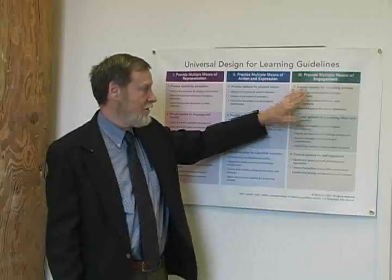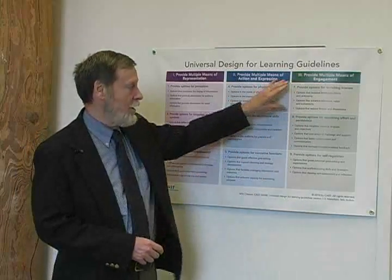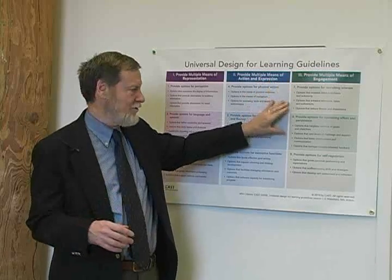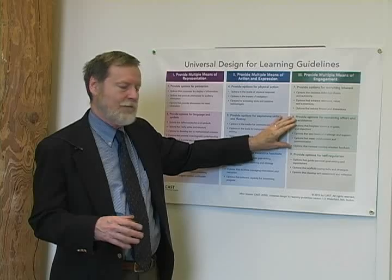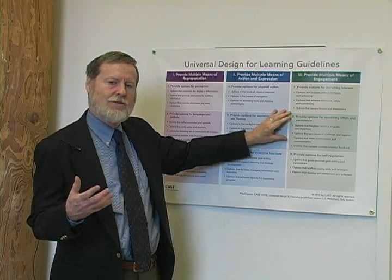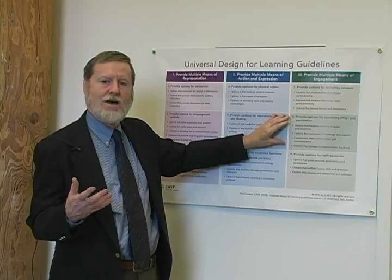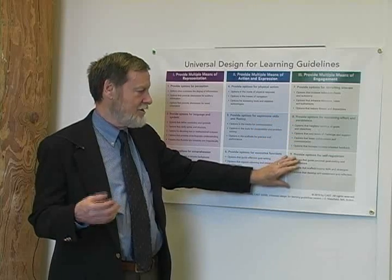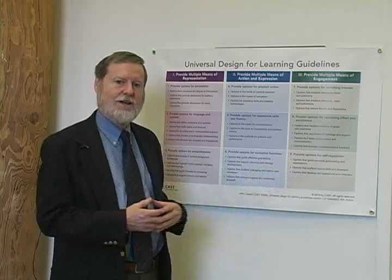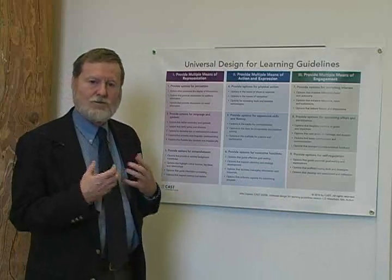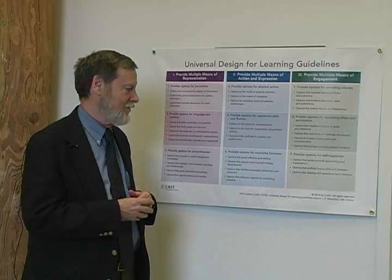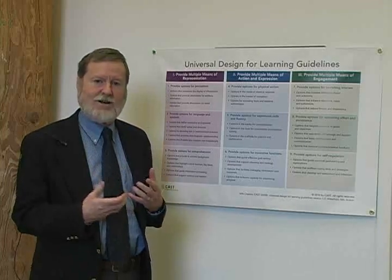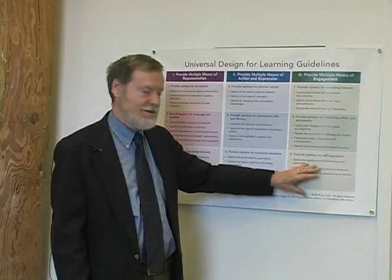So it's to get to executive functions that these others are critical. And lastly, on multiple means of engagement — at the beginning it's how do we recruit interest, but that's too external. We move a little higher when we say how do the kids learn to sustain engagement and persist in spite of difficulties. But the top of that hierarchy is really how do kids set good personal goals about development for themselves, how do they cope, and how do they reflect on their own development and engagement?